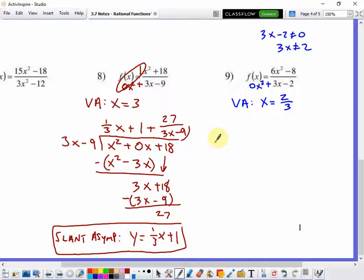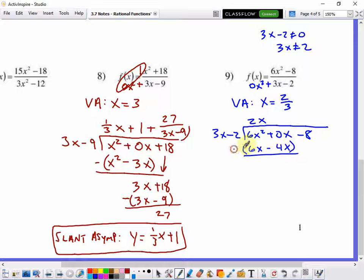For the slant asymptote, 3x minus 2 goes into 6x squared plus 0x minus 8. 6x squared divided by 3x is 2x. And then I distribute that on 3x minus 2, 6x squared minus 4x. And I have to subtract that quantity. 6x squared minus 6x squared is 0. 0 minus negative 4x is positive 4x. And I bring down the minus 8.